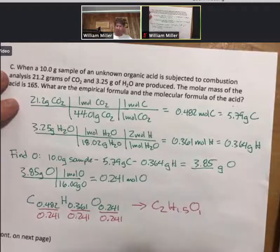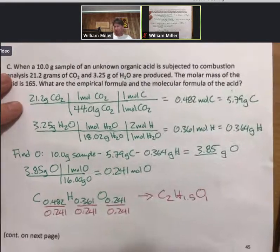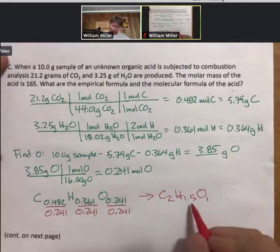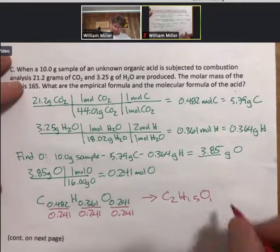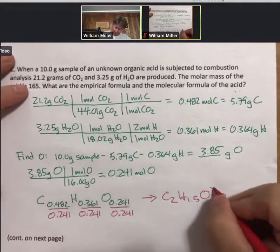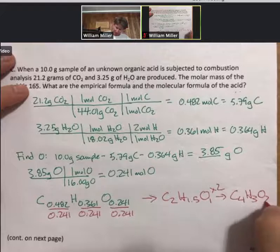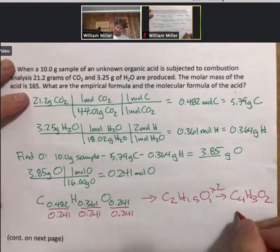O1, which is not my empirical formula because it has this half number in it. I'm going to multiply everything times 2 so I get C4H3O2 as my empirical formula.